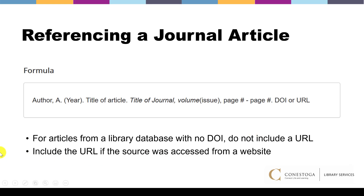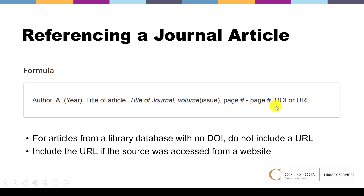You can see that we must include the author, the year, the title of the article, the title of the journal, the volume and issue number, the page number range, and the DOI or URL.